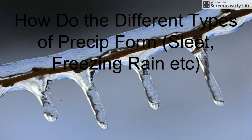Hey guys, what's up? Today I'm gonna do a little video on how the different types of precipitation form — meaning how sleet and freezing rain and snow form, and what happens up in the atmosphere in order for sleet and freezing rain to happen.